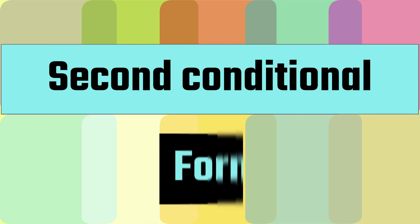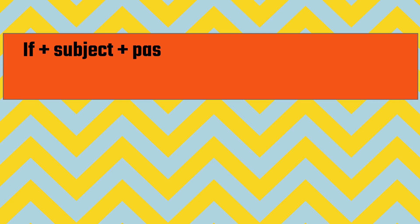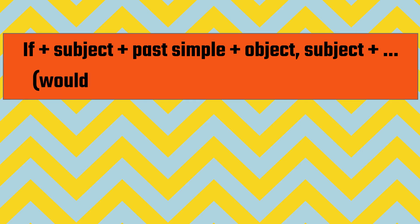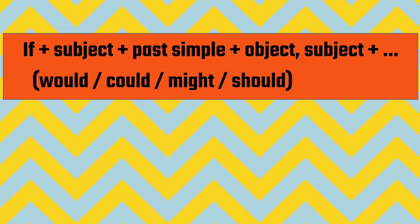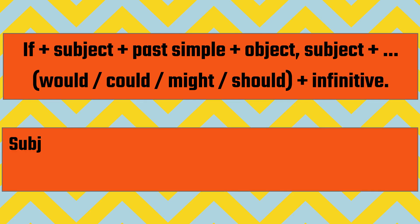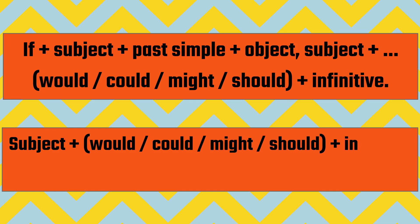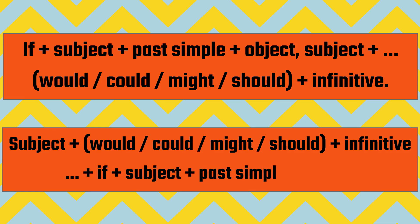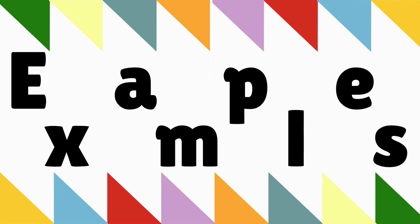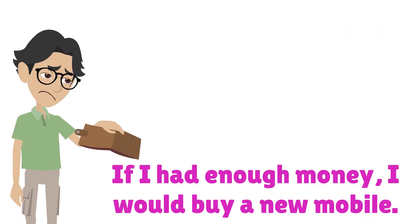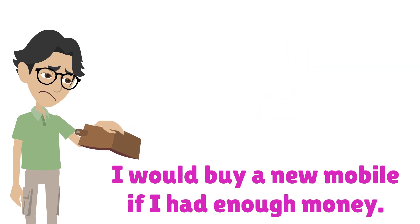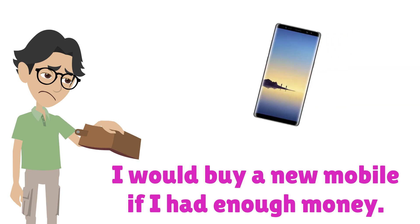Second Conditional Form: If plus Subject plus Past Simple plus Object, Subject plus Would/Could/Might/Should plus Infinitive. This can also be reversed: Subject plus Would/Could/Might/Should plus Infinitive plus If plus Subject plus Past Simple plus Object. Example: If I had enough money, I would buy a new mobile. I would buy a new mobile if I had enough money.